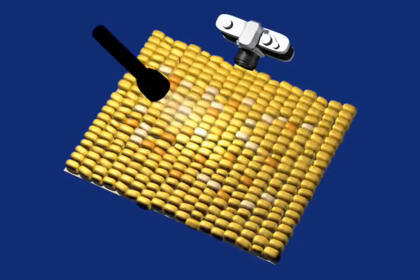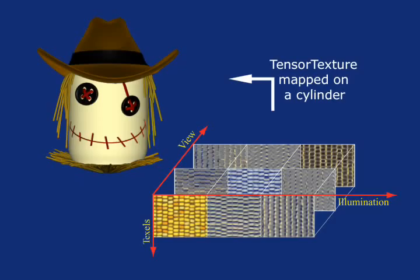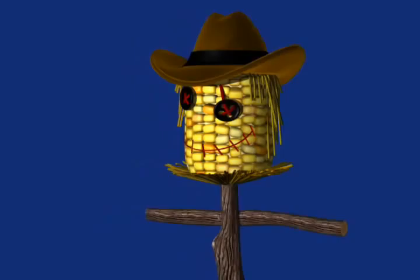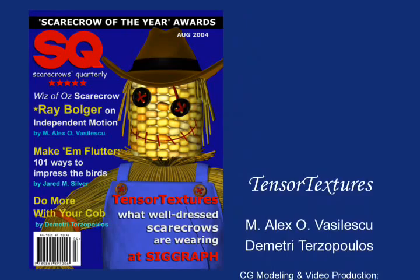In the next animation, the corn kernels are a tensor texture mapped on a cylindrical surface.